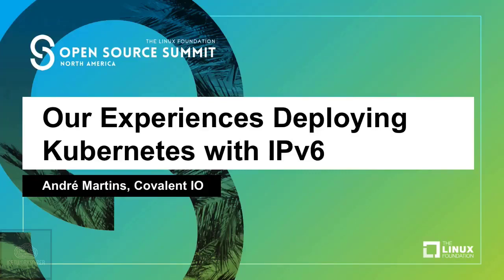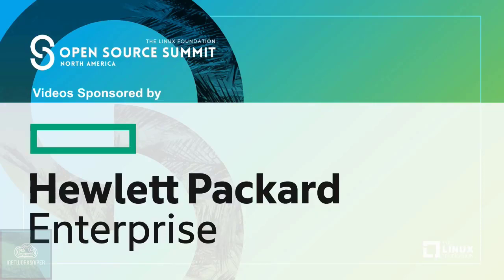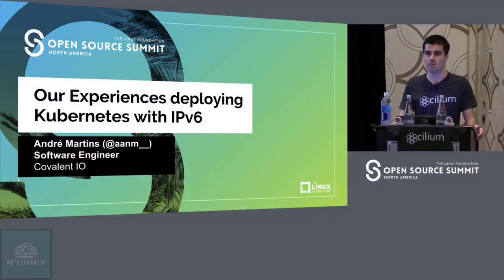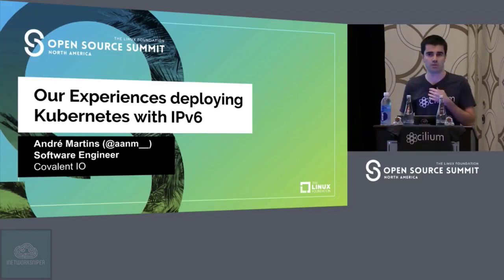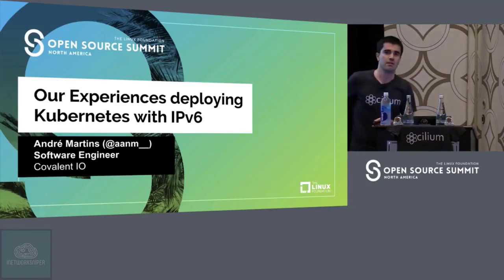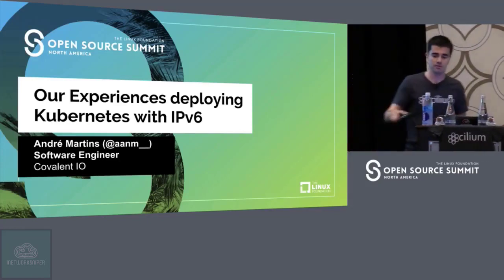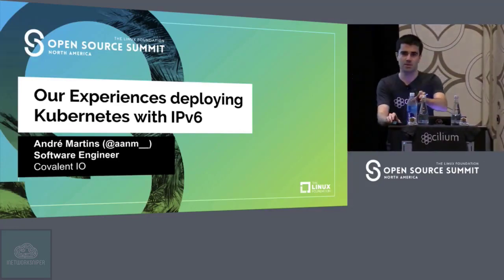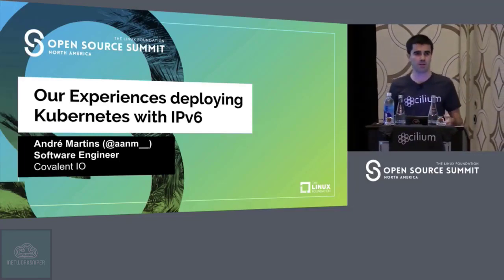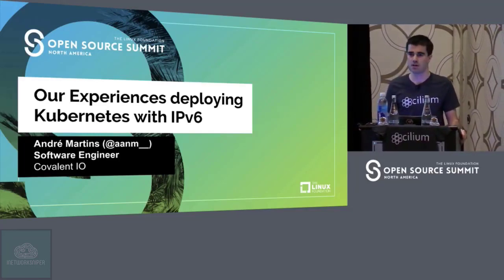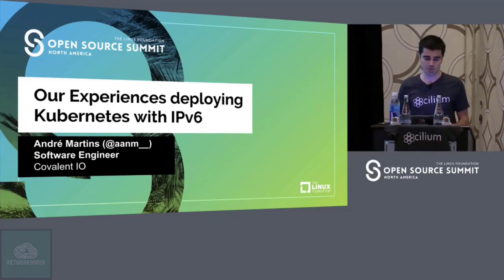Hello, good afternoon. I'm here to talk about IPv6. I work at Covalent.io. We are developing a software called Cilium — it's open source that allows you to have security at layers, and it also provides IPv6 connectivity in your infrastructure as well.